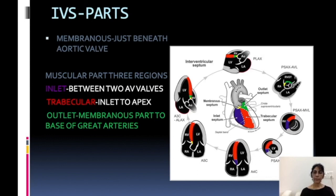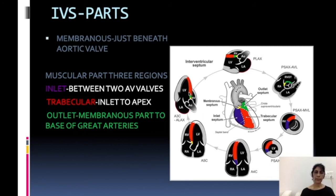At the papillary muscle level you again see the same trabecular and inlet septum. In the four-chamber view, since we are close to the atrioventricular valves, you will again see the trabecular and inlet septum. In the five-chamber view, since you can see the origin of the aorta, you will also be able to see the membranous part just below the root of the aorta. In the apical three-chamber view, again since the aorta is seen, the part next to it is the membranous, then the outlet part, and then the trabecular part.